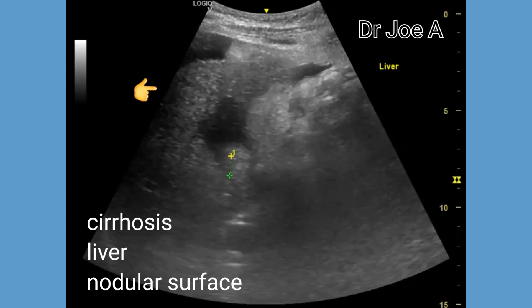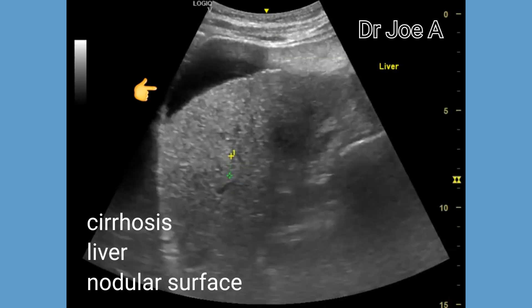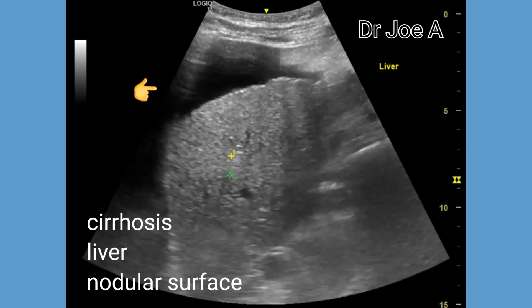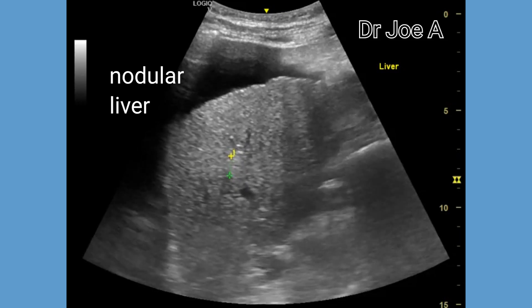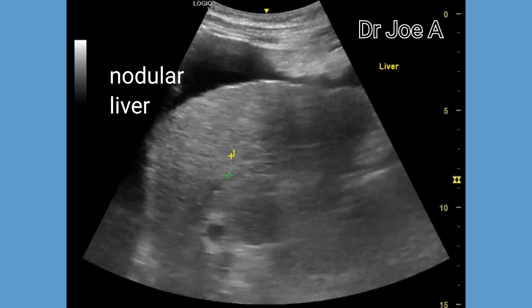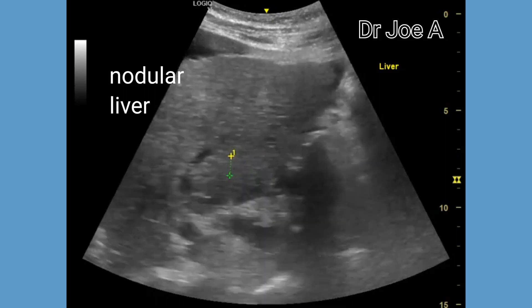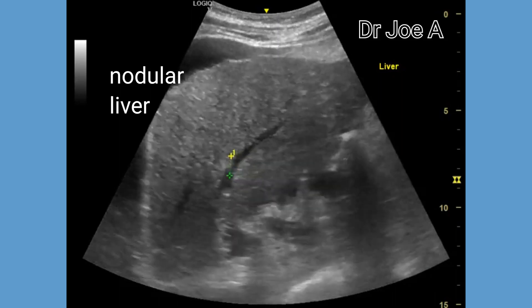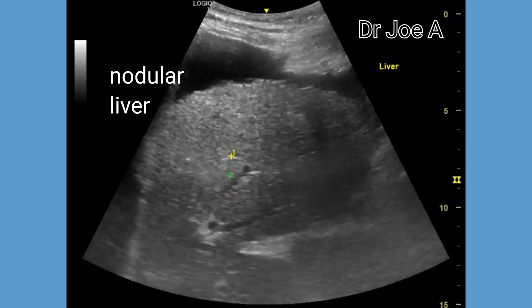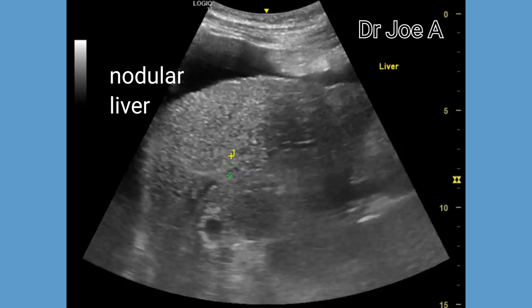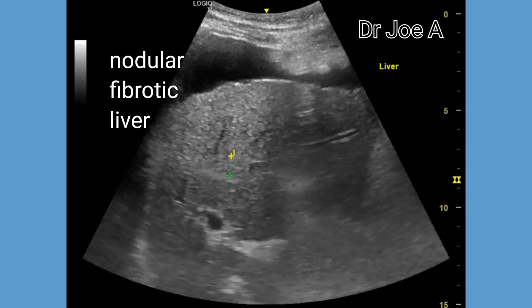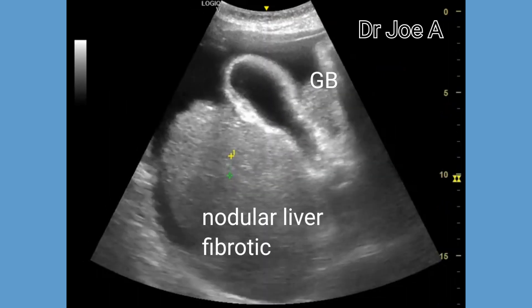Now we move over to the liver, which appears nodular and bathed in ascitic fluid. Observe the surface of the liver outlined by ascitic fluid, showing nodularity. In addition, the liver is fibrotic and shrunken in size, suggesting advanced cirrhotic changes.